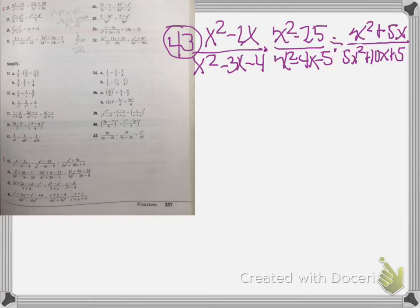Okay, in number 43 we have x squared minus 2x over x squared minus 3x minus 4, times x squared minus 25 over x squared minus 4x minus 5.